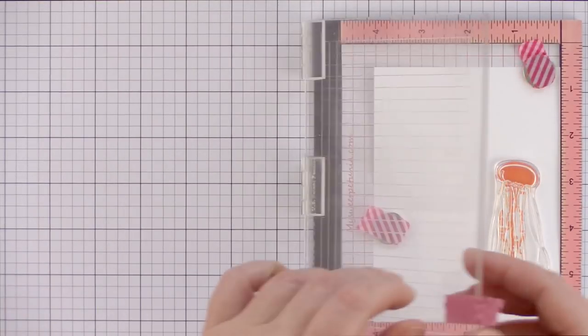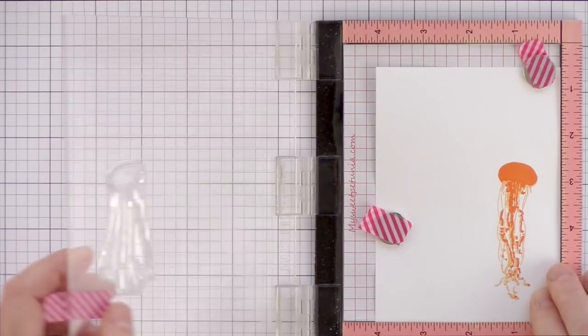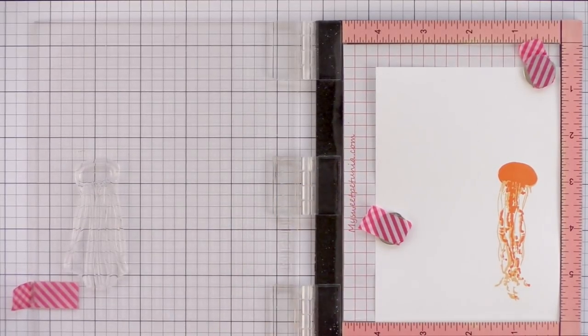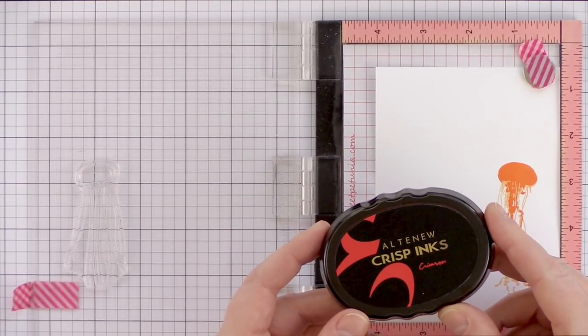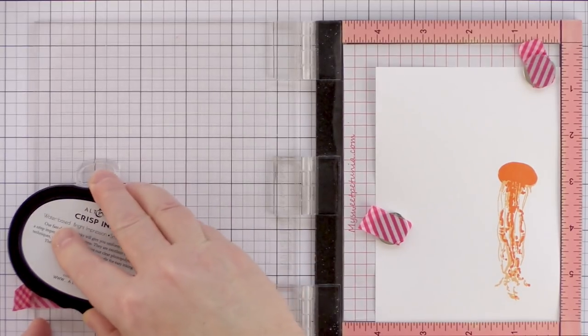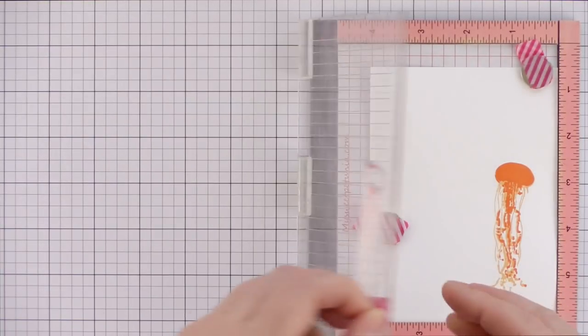There is a third layer to the jellyfish in this stamp set, however I'm not going to stamp that now. Instead, I'm using the outline image and lining that up, and then I'm going to stamp it in crimson ink to give the red detailing I'd seen in the pictures of the jellyfish.